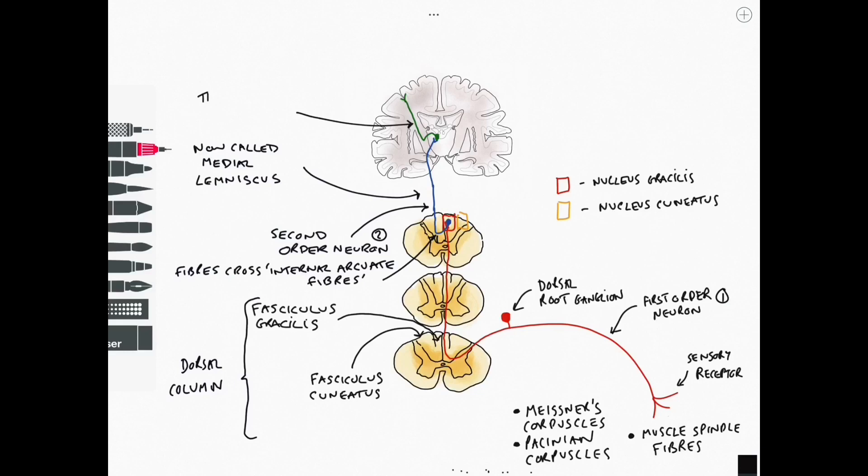so the second order neuron is going to go all the way up to the thalamus and it's going to synapse in the nucleus known as the VPL that's the ventral posterior lateral nucleus of the thalamus because that information comes from the body and trunk information from there leaves in a third order neuron that travels through the internal capsule through the corona radiata